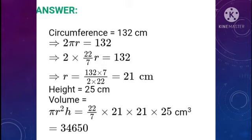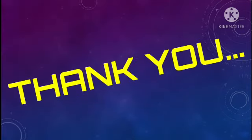Height = 25 cm. Volume of the cylinder = πR²H = (22/7) × 21 × 21 × 25 = 34,650 cm³. I hope you all understood the above sums. Thank you.